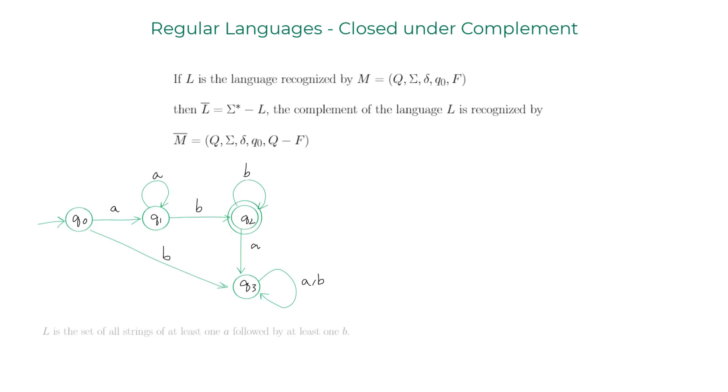The language recognized by this DFA is the set of all strings that have at least one A followed by at least one B. Here are examples of strings accepted by this DFA.